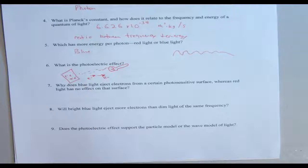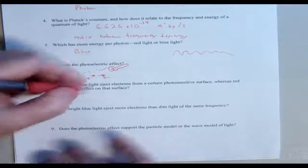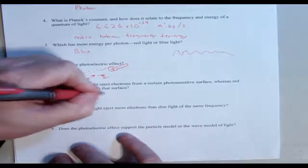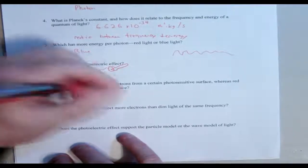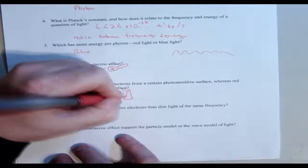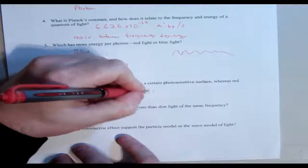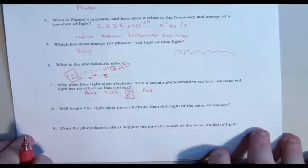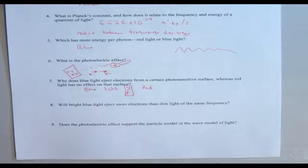Number seven: why does blue light eject electrons from a photosensitive surface whereas red light has no effect? Blue light has a higher frequency than red light, and it all depends on the frequency.